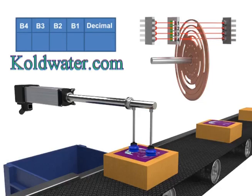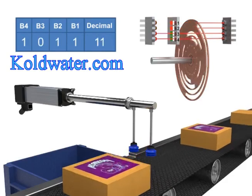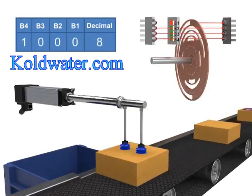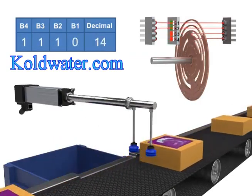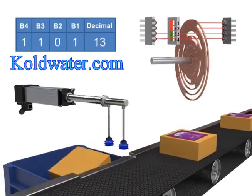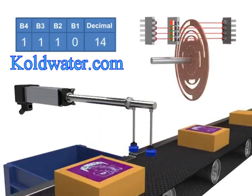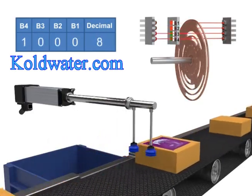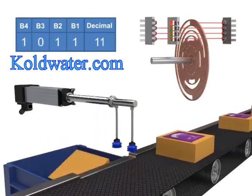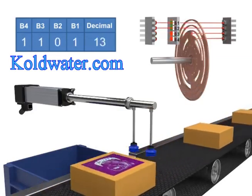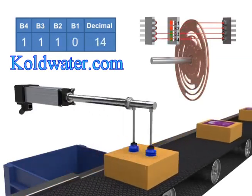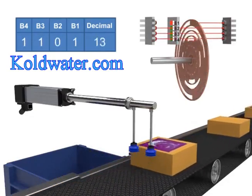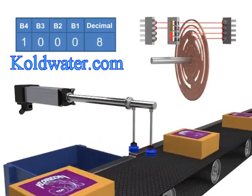For robot applications, absolute encoders are commonly used for precise positioning operations. The actuator in this example demonstrates the function of the absolute encoder in operation. As the actuator moves to push the carton, the encoder provides feedback that it has reached the user-defined position. The actuator then moves back to the home position, verified by the encoder and completing the cycle. Using feedback devices closes the loop in motion control systems.